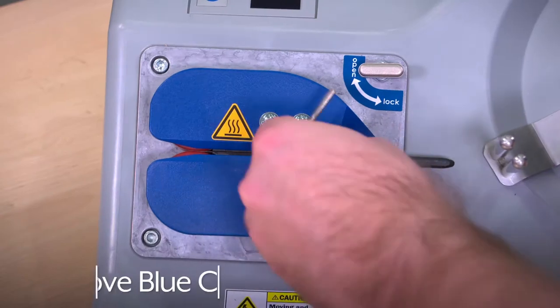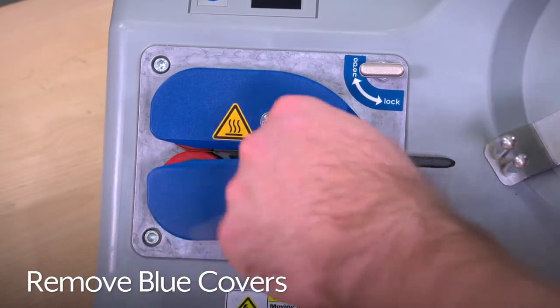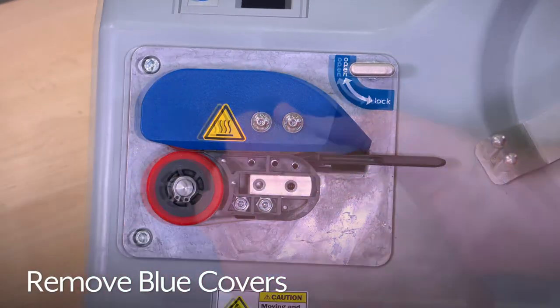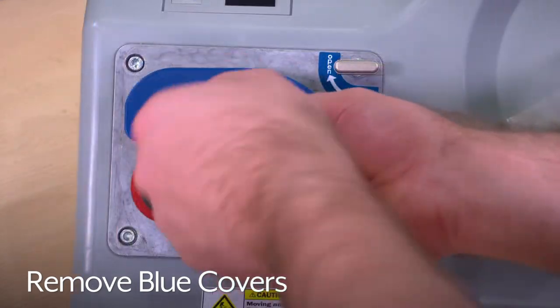To replace the belts, remove the blue covers on the top and bottom of the sealing unit using the included 3mm Allen key.